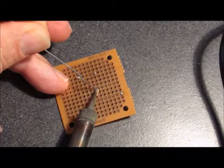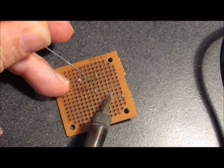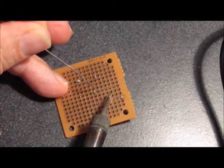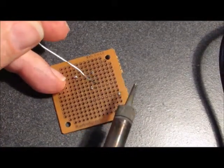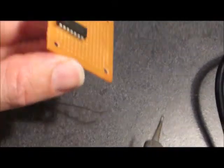You want just enough solder to form a small cone from the copper pad to the lead of the IC. Too little solder and you'll have a void in the joint. Too much solder and you'll have a round blob instead of a cone shape, or worse yet, a short to the next pin.